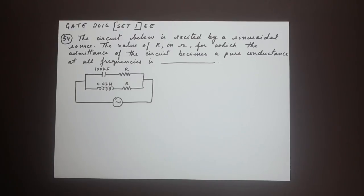The circuit below is excited by a sinusoidal source. The value of R in ohms for which the admittance of the circuit becomes a pure conductance at all frequencies is dash.